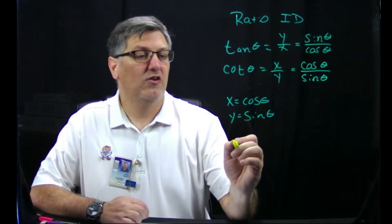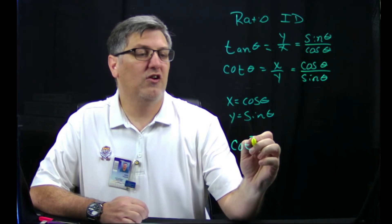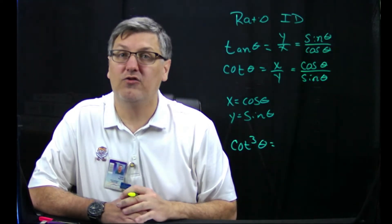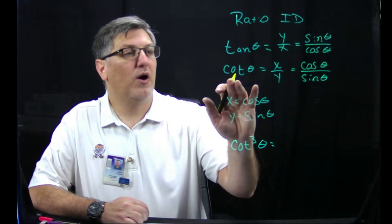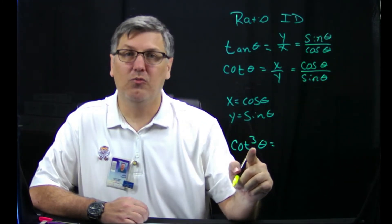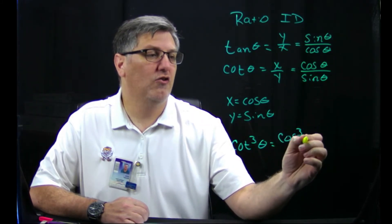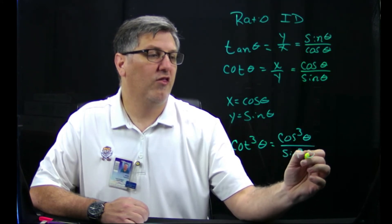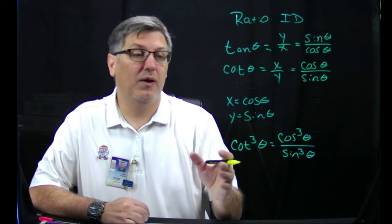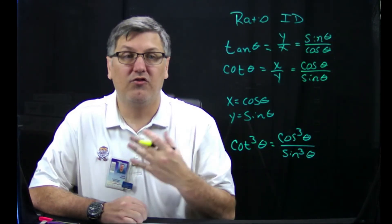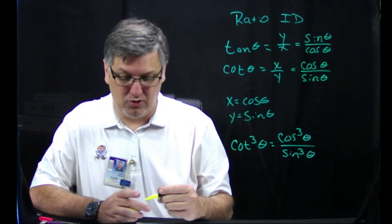Now, if I ask you to write cotangent cubed theta in terms of sine and cosine, well, I know cotangent is cosine over sine, but this is cubed, so I have three of them. So I would write this as cosine cubed theta over sine cubed theta. And that's it. That's how you'll be able to write tangent and cotangent in terms of sine and cosine by using the ratio identity.